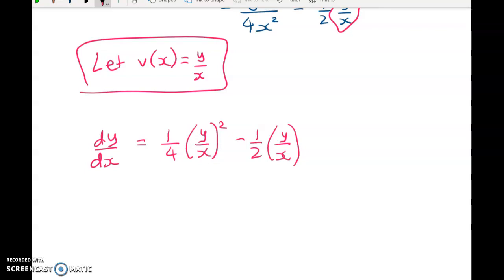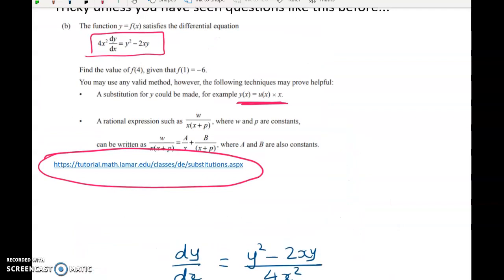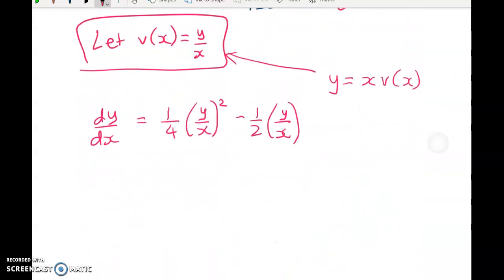So instead of working with Y, I'm going to work with V. So Y is equal to X times V of X. Hopefully now you can see that these hints that they've given you really are quite helpful. So we're making a substitution for Y, and this is it here. It just might have been a bit nicer if they could have written that as Y over X is equal to U over X. So how do I link DY by DX with DV by DX?